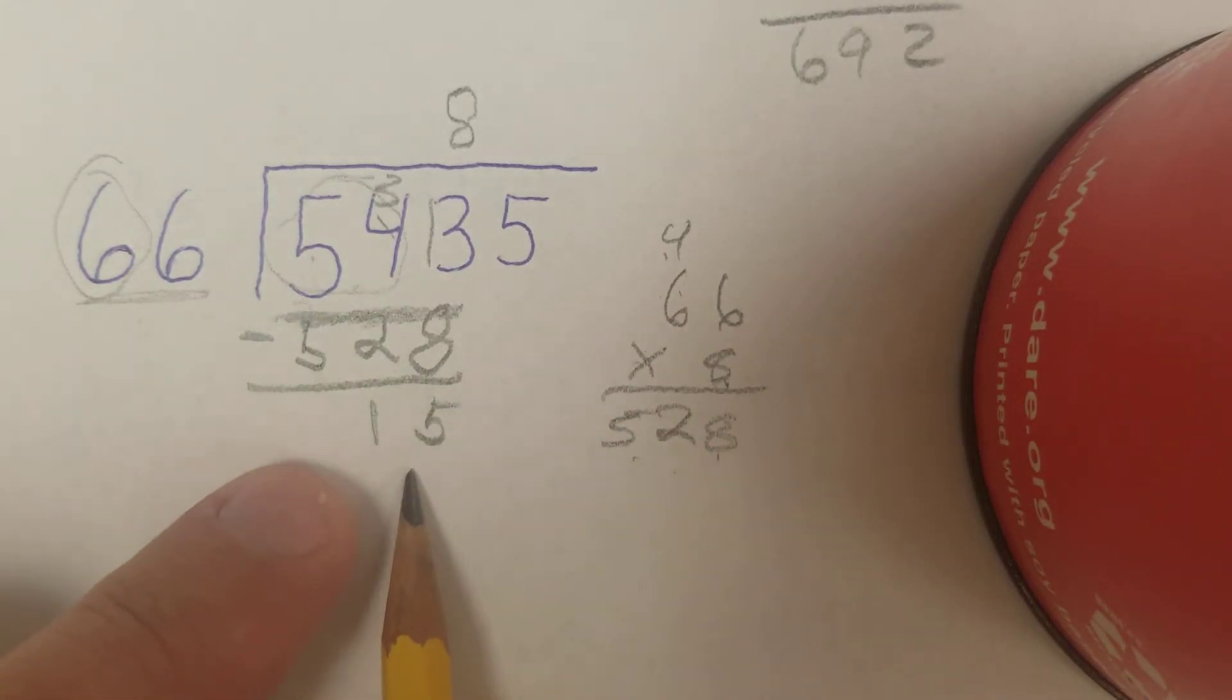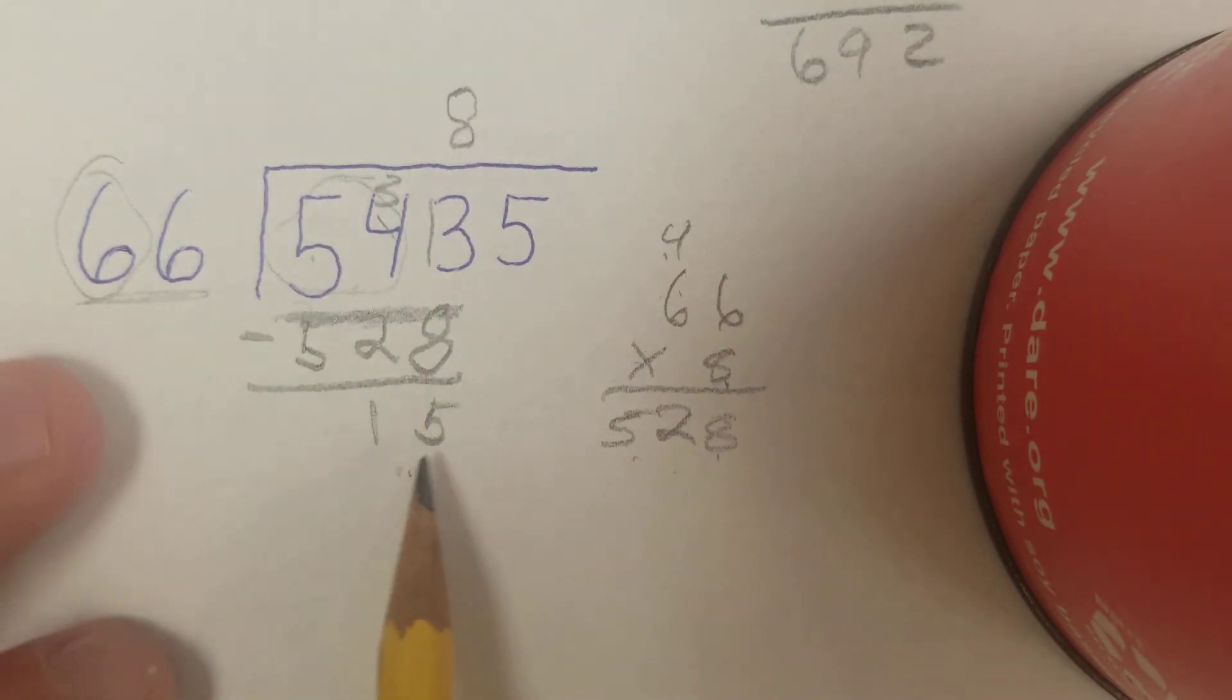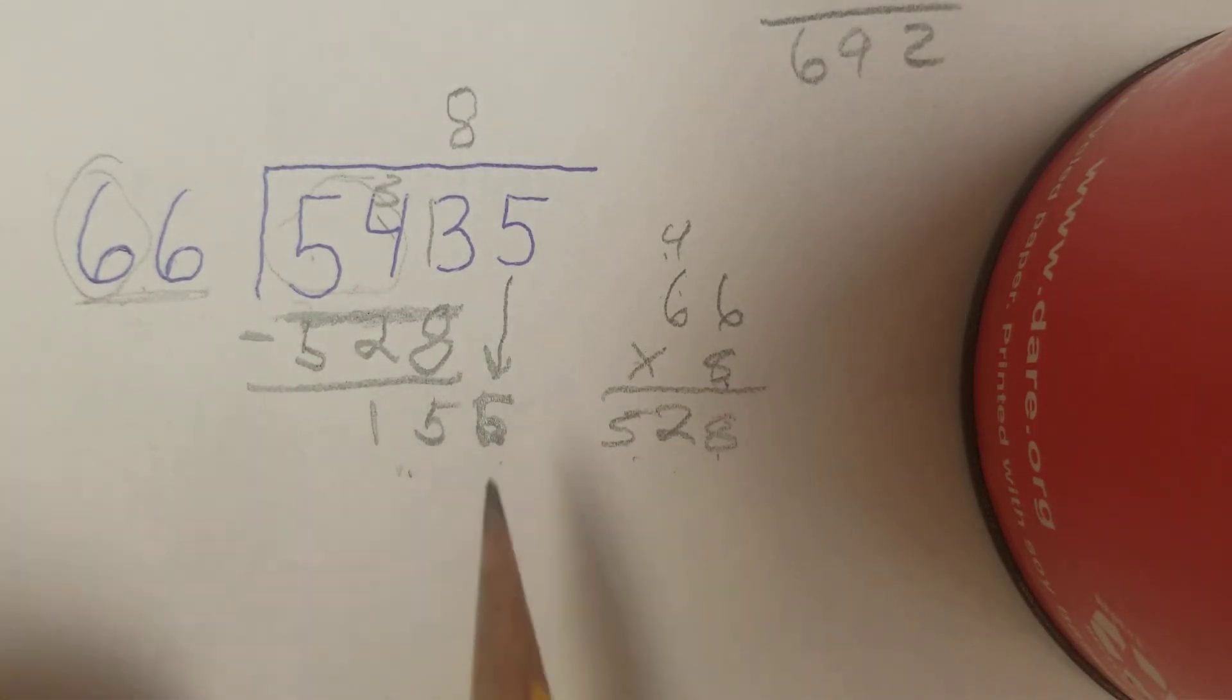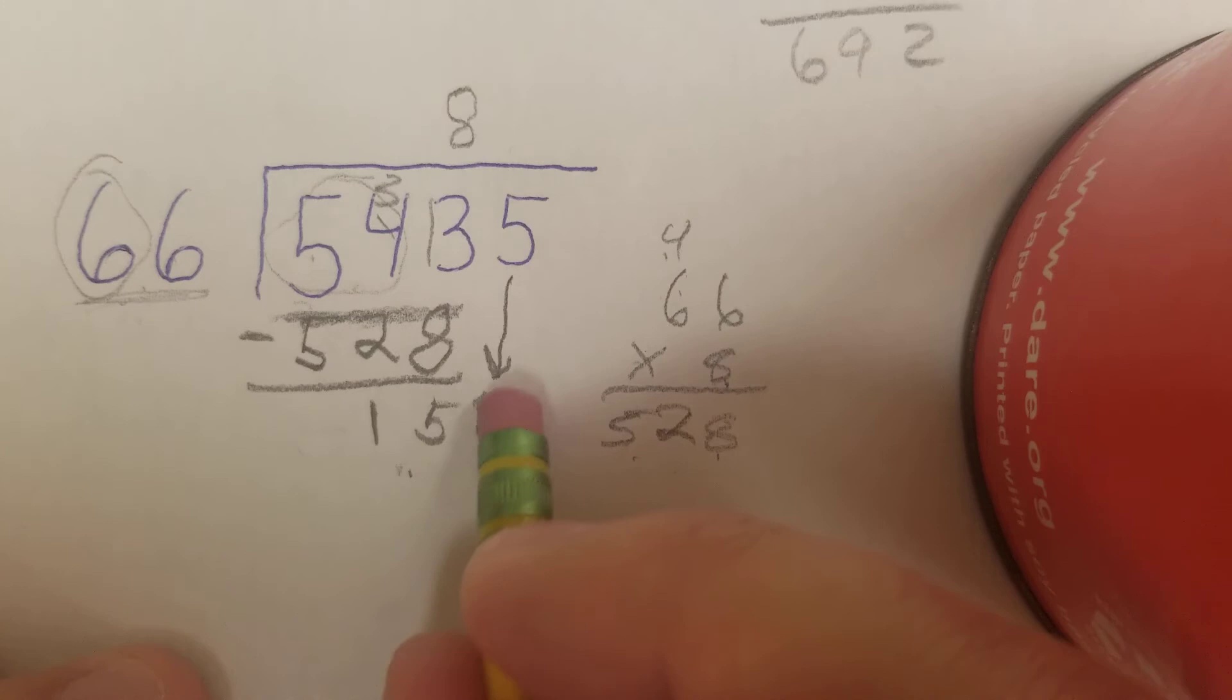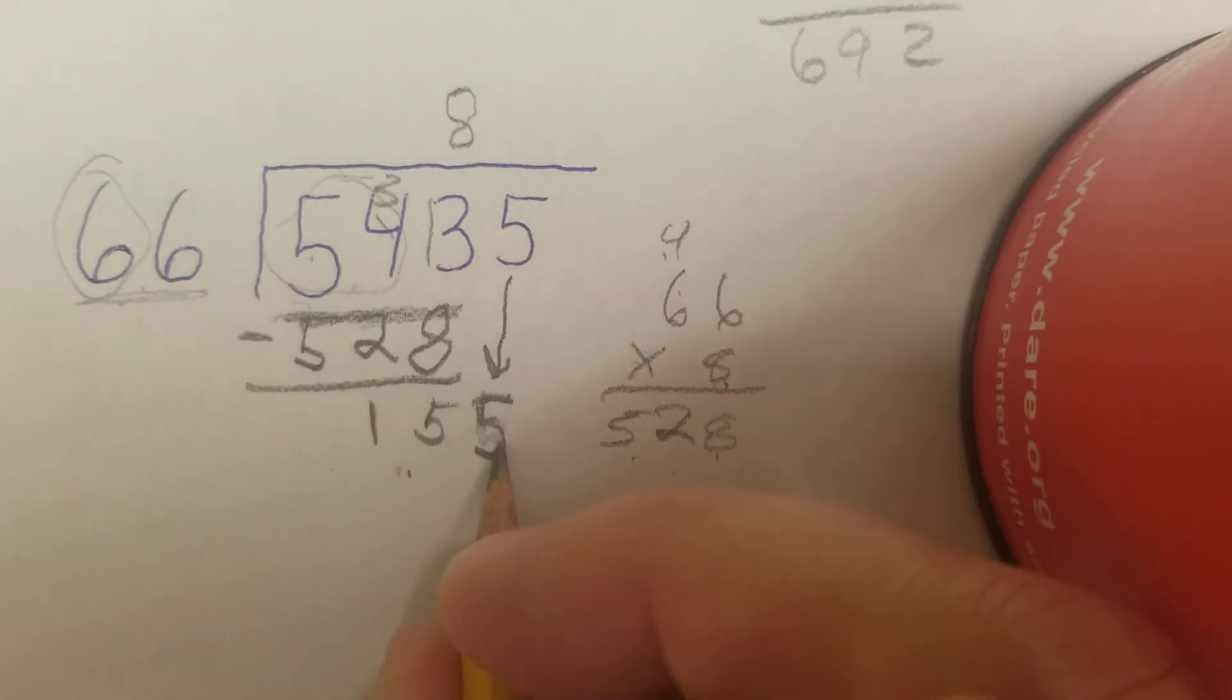My remainder is 15, which is smaller than 66. So I'm good. If this was larger than 66, I would have to change this to a 9 to get a bigger number so I didn't have a remainder bigger than my divisor. I'm going to bring down my 5. So now my number is 155.